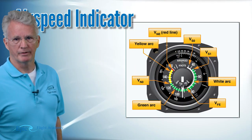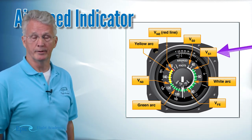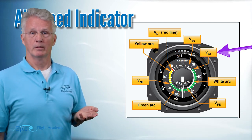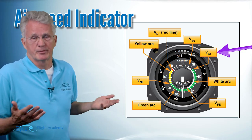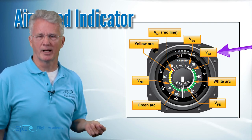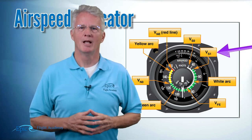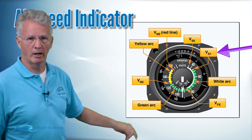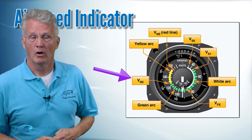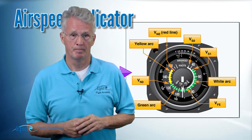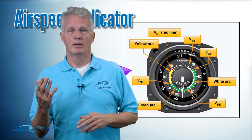Now let's take a look at the green arc. The bottom of the green arc is defined by VS or VS1. We think of that as the stalling speed in a clean configuration — in the 172, that means flaps up. That is the bottom of the green arc. The top of the green arc is a speed called VNO, and it doesn't mean you can't fly there — yes, you can fly there. It's called the maximum structural cruising speed.